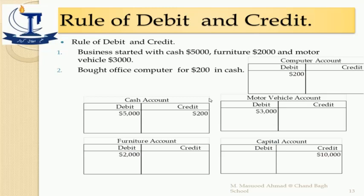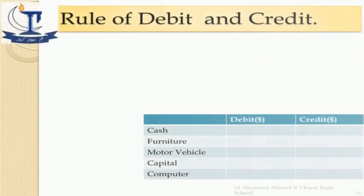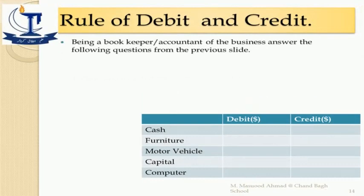Let's see what happens if you bought an office computer for $200 in cash. Cash will be drained out from your business — cash is your asset, it is decreasing, so you place the amount on its credit side: $200 on the credit side of the cash account. The same value is given to the computer account because the computer asset is increasing, so $200 on the debit side. The debit and credit effects are equal.